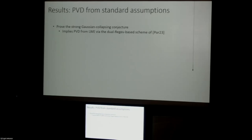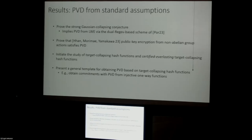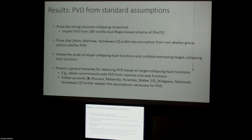We then look at our proof technique and generalize it. If you were at this morning's talk, you saw Minky talk about a public-key encryption scheme from non-Abelian group actions — interestingly, without any changes, we can show that scheme also satisfies publicly verifiable deletion. Generalizing further, we initiate the study of what we call target collapsing hash functions and certified everlasting target collapsing hash functions, which give a general template for obtaining publicly verifiable deletion. We can show commitments with publicly verifiable deletion from injective one-way functions — we don't even need public-key assumptions for that. There are already follow-up works further weakening the necessary assumptions.